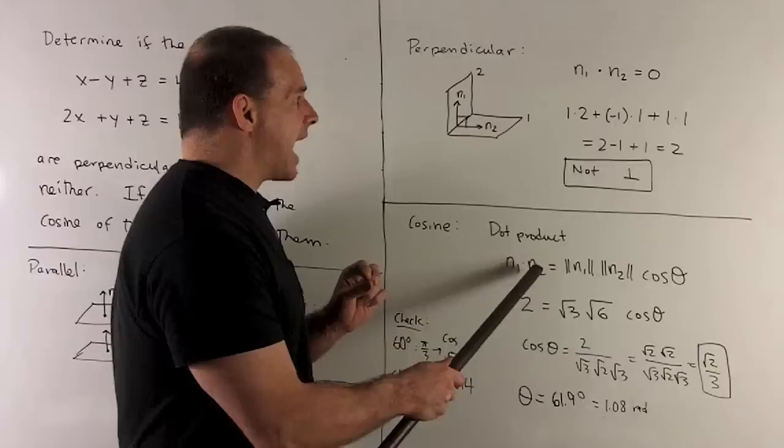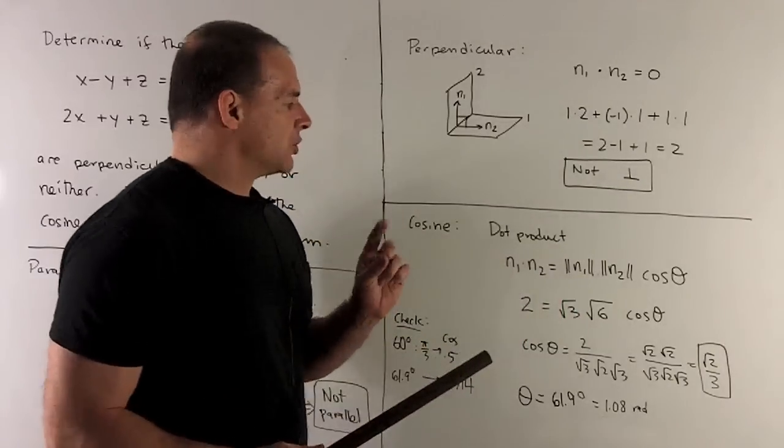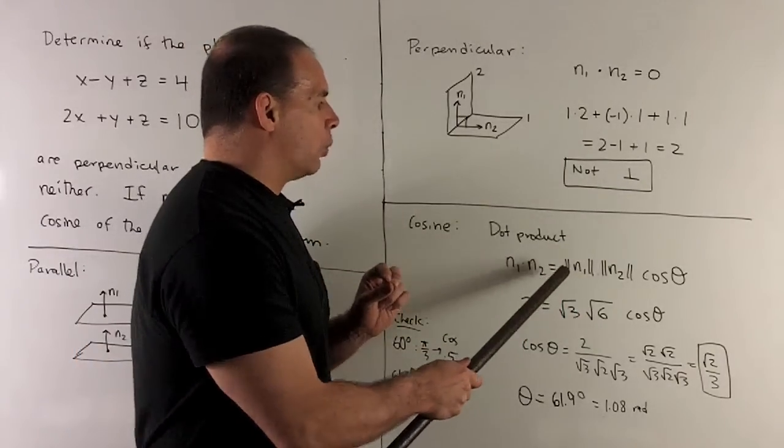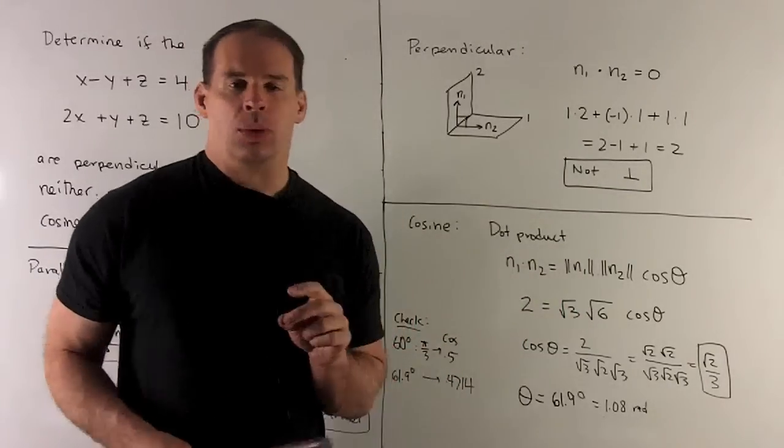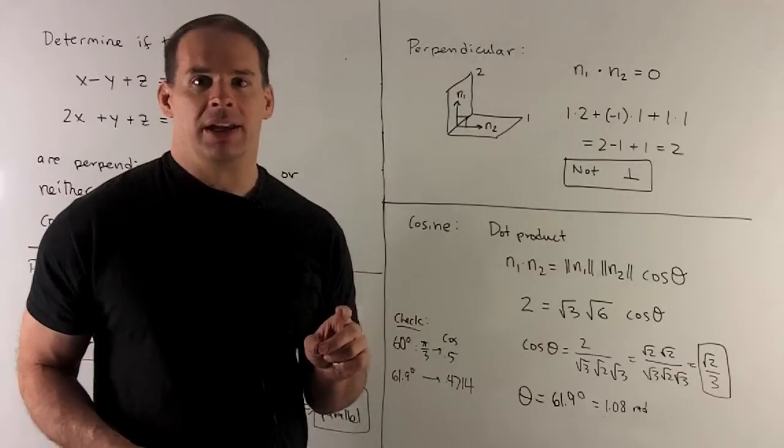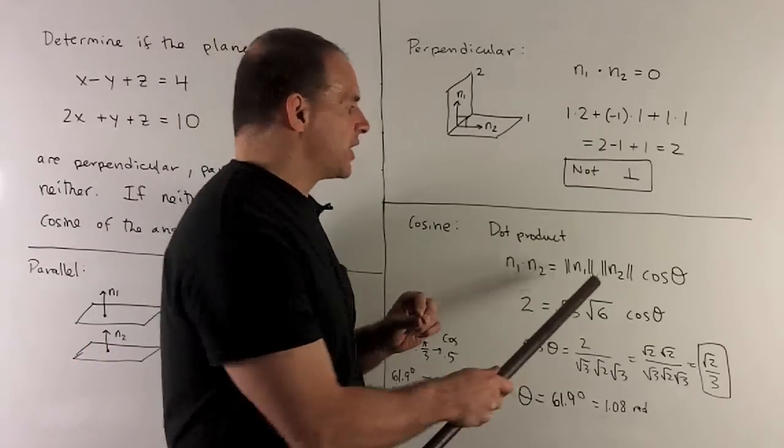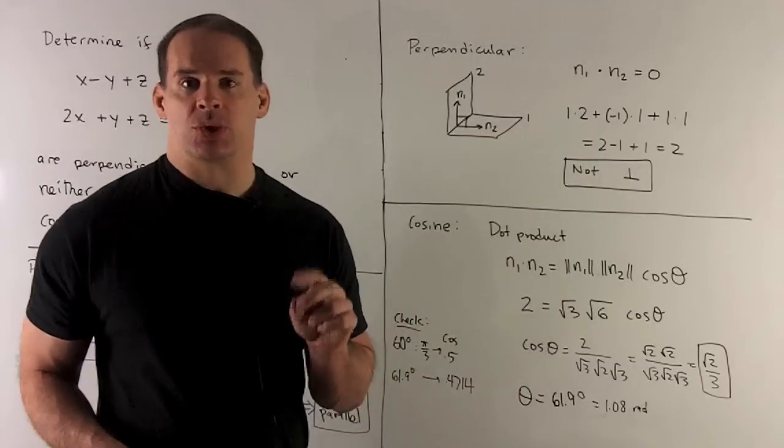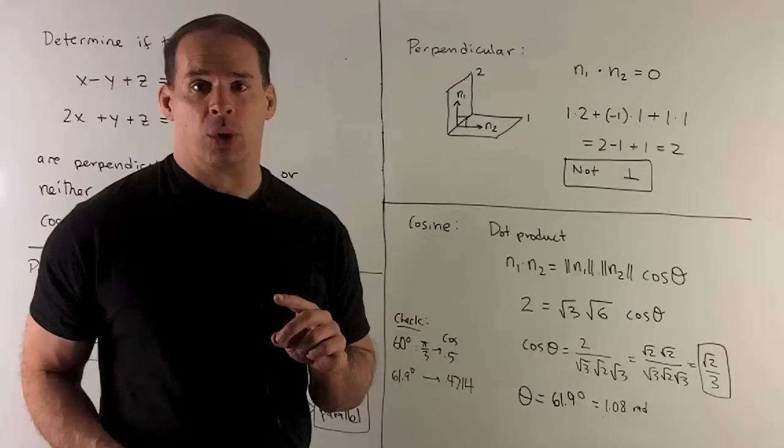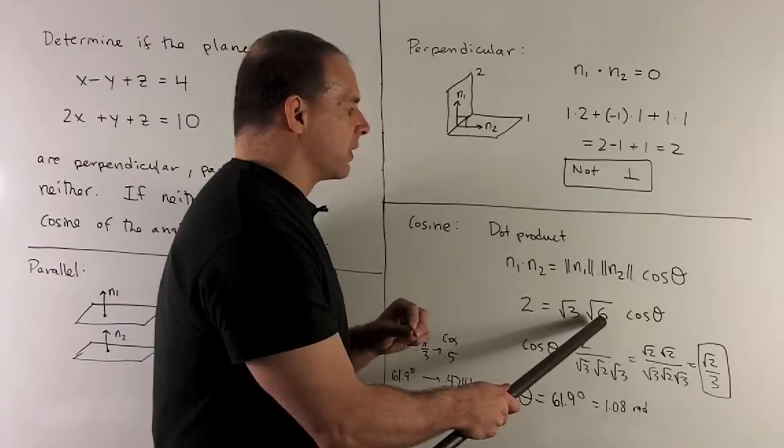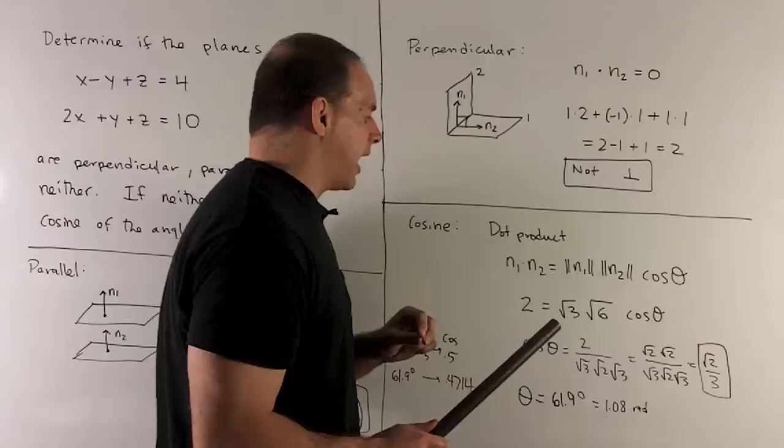Now, we just saw that the dot is equal to 2. So on the other side, what do we have? Well, n1, that's going to be 1 squared plus 1 squared plus 1 squared gives me square root of 3 for the length. And then for our second one, we'll have 2 squared plus 1 squared plus 1 squared gives me a 6 square root. I get a square root of 6 for the length times the cosine of the angle.